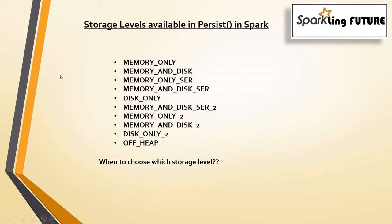The remaining storage levels have the same options but with underscore 2 or underscore 3 suffixes. The functionality is similar to the above levels, but the replication of each partition will happen on cluster nodes. When you mention 2, replication happens on 2 cluster nodes; when you mention 3, replication happens on 3 cluster nodes.